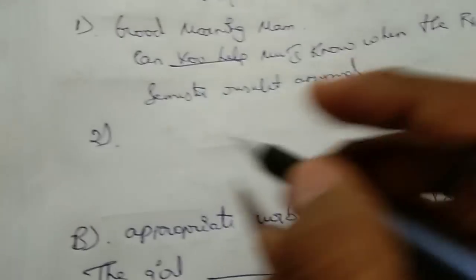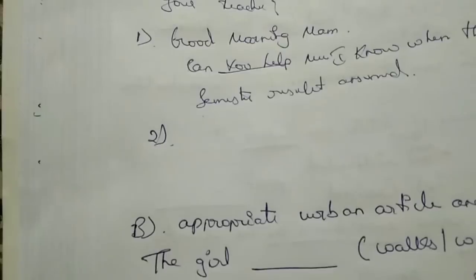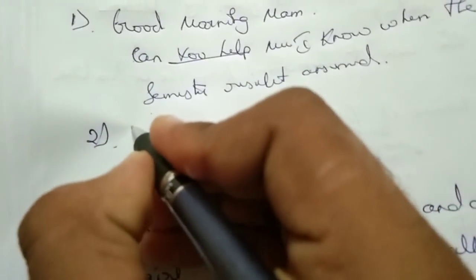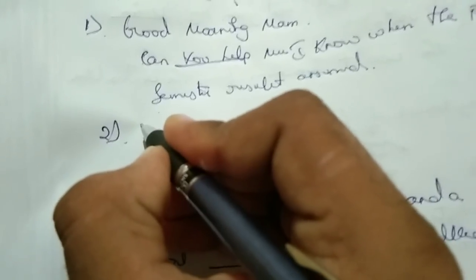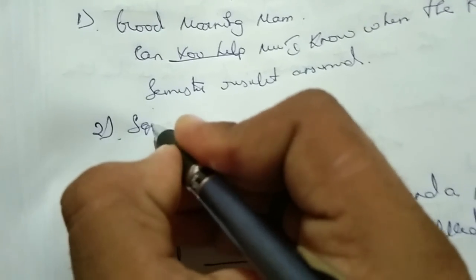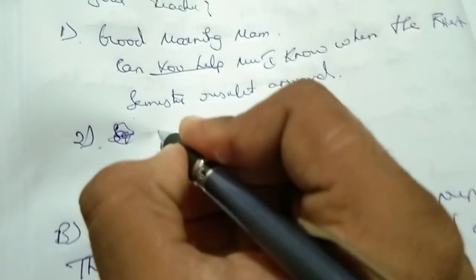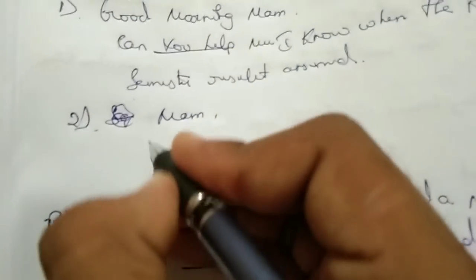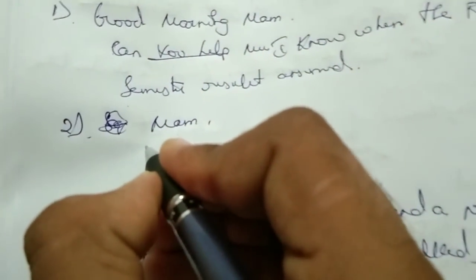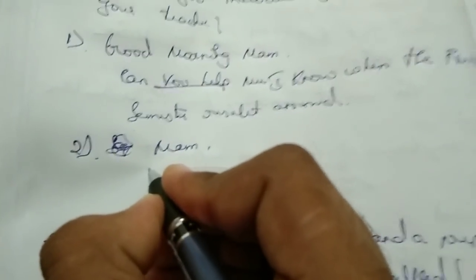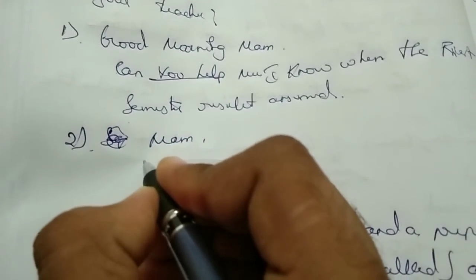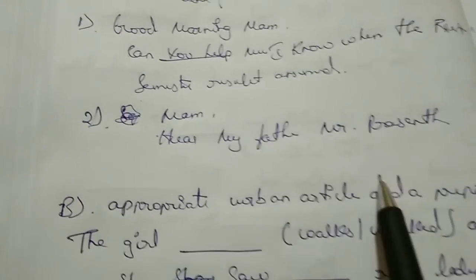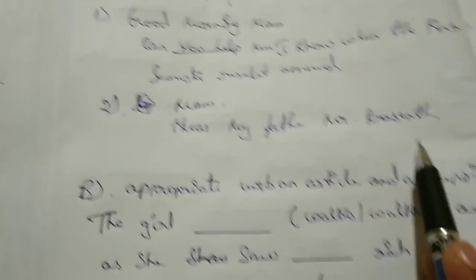Next: 'How do you introduce your father to your teacher?' Imagine your teacher is sitting with another parent. You would say: 'Excuse me ma'am' — and then introduce your father. For example: 'Here is my father, Mr. [Name].' This is how you frame an introduction in this situation.